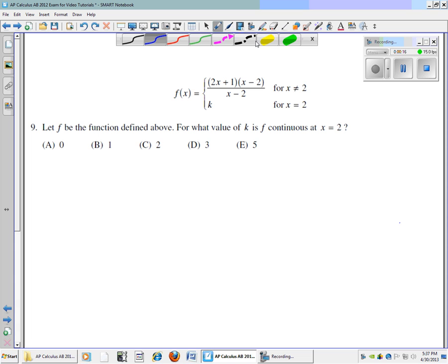The function defined above is the piecewise function where f of x is equal to, one quantity is 2x plus 1 times another quantity x minus 2, all divided by quantity of x minus 2, for values of x not equal to 2. The second part of the piecewise function is k when x equals 2.